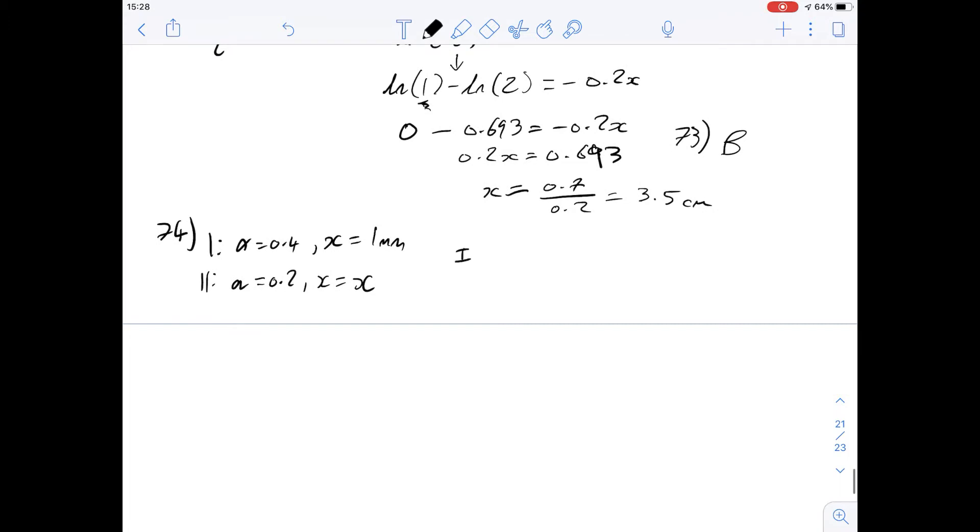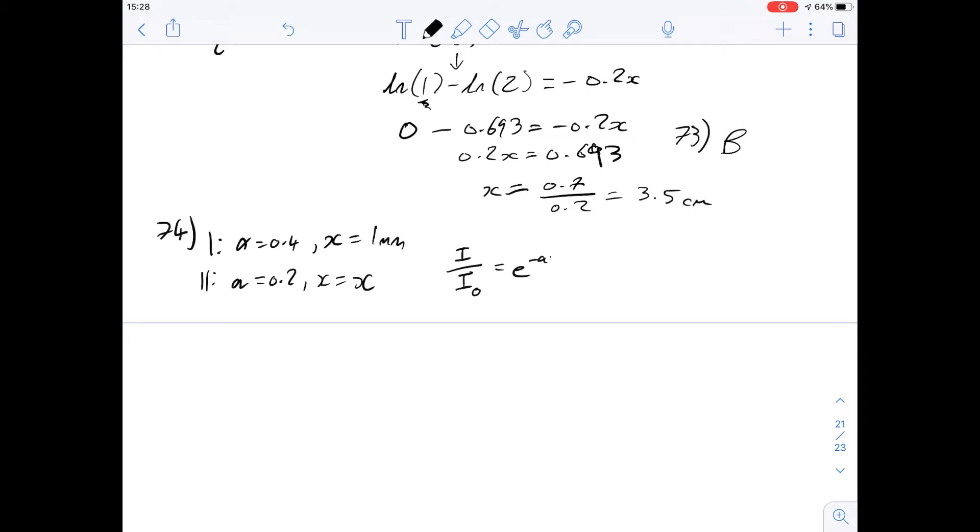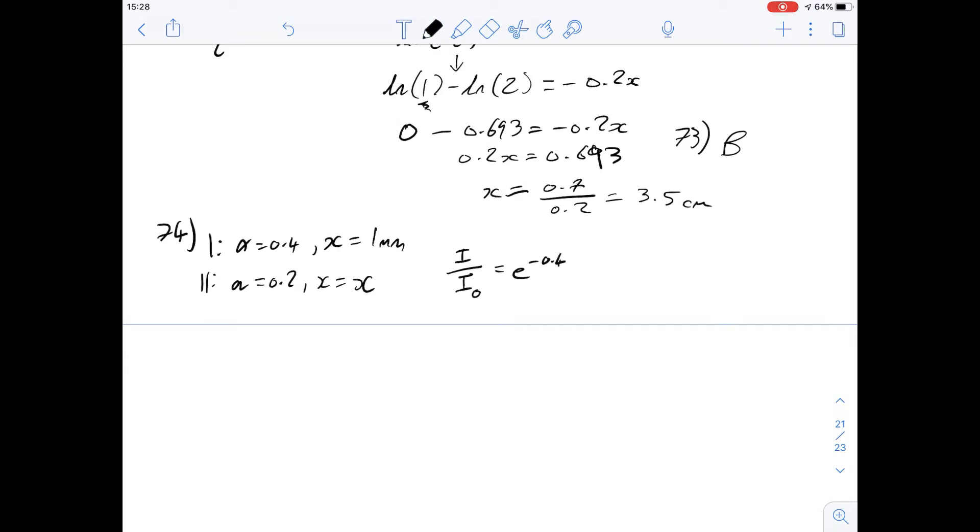So we're given this part of the equation which is really the ratio of photons that enter and leave this absorbing material and if they're going to have the same absorption then this value is going to be the same for both of them. So we can say let's change this around for absorber 1 where we've got minus 0.4 times 1 and for the next one we've got I by I₀ equaling e to the minus 0.2x. If this is going to be the same as this then we can say e to the minus 0.4 equals e to the minus 0.2x.